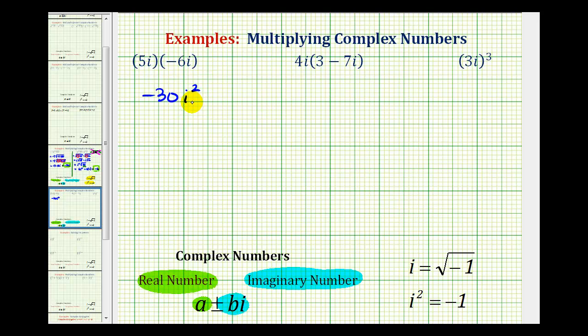But it's not in the correct form because it's not in the form of a complex number. But since we know that i is equal to the square root of negative 1, and i squared is equal to negative 1, we can substitute negative 1 for i squared. So we'd have negative 30 times negative 1, which is equal to positive 30.